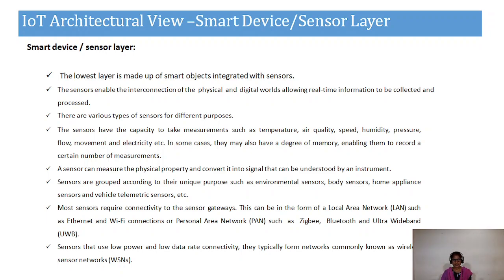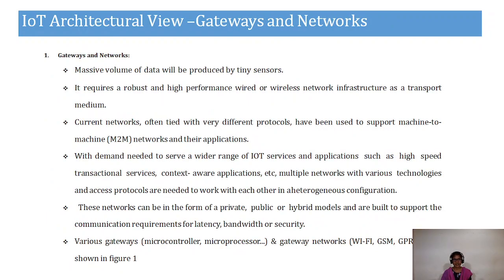These sensors can be connected to large sensor gateways like local area networks or personal area networks such as ZigBee, Bluetooth, and Ultra-Wideband. Sensors use low power and low data rate connectivity and typically form networks — commonly wireless sensor networks. Above the sensor layer is the gateway and network layer, which handles the large volume of data produced by sensors with robust, high-performance wired and wireless network infrastructures.